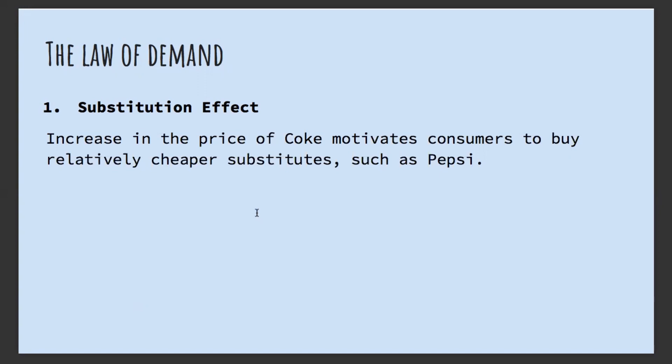So when the price of Coke increases, the quantity demanded of Pepsi will increase and the quantity demanded of Coke will decrease. It also works the other way around — if the price of Coke decreases, the quantity demanded of Coke will increase and the quantity demanded of Pepsi will decrease, because they are substitutes.